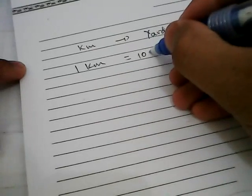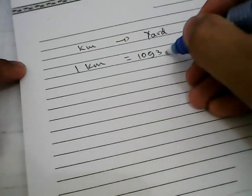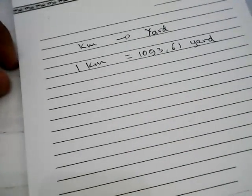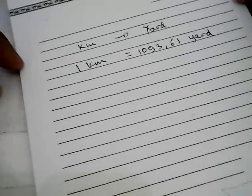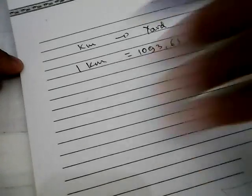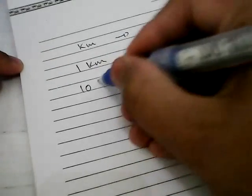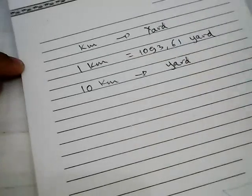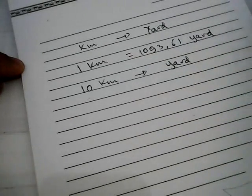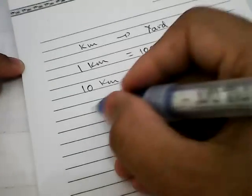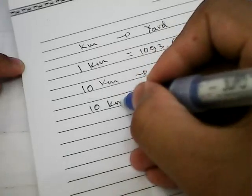For example, I want to know how long is, let's say, 10 kilometers converted into yards. All right, let's go ahead and solve this problem. You need to write these 10 kilometers again and give it an equal sign.